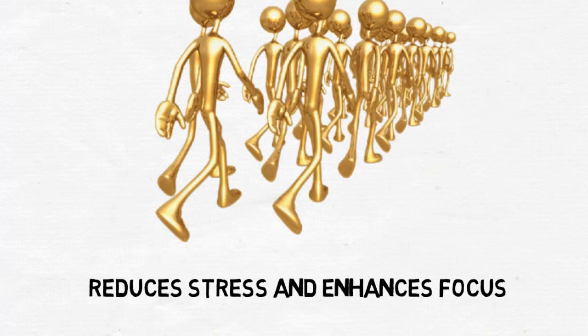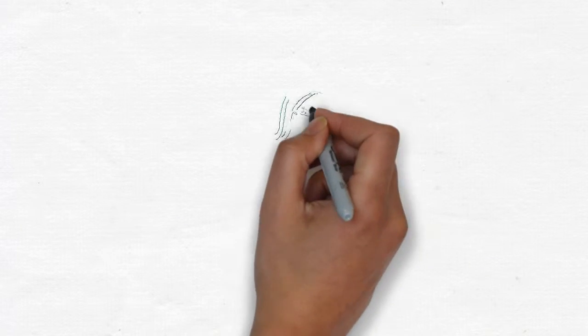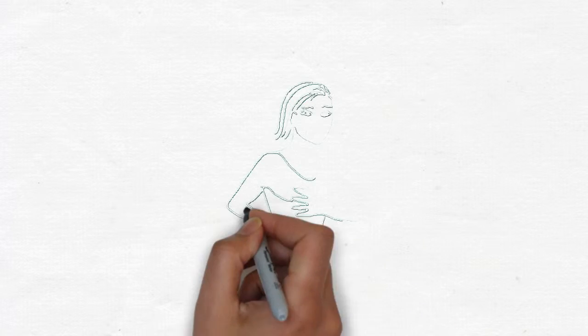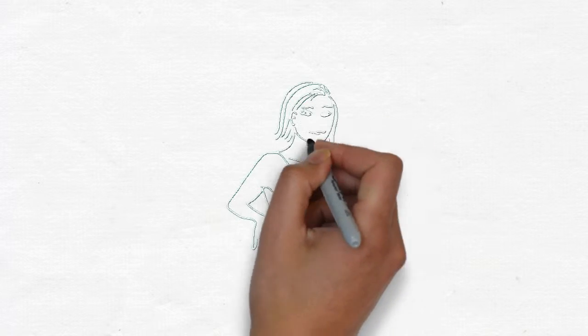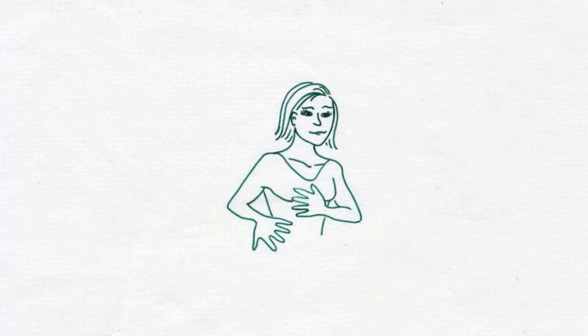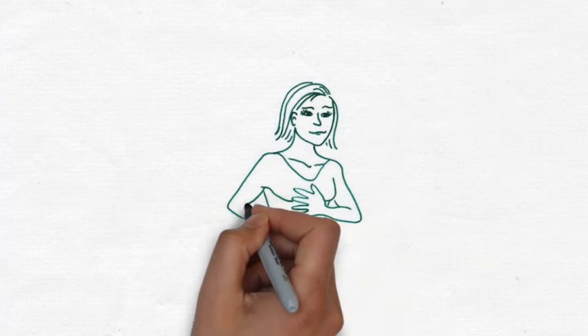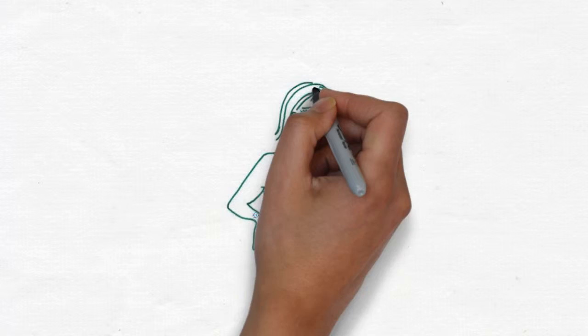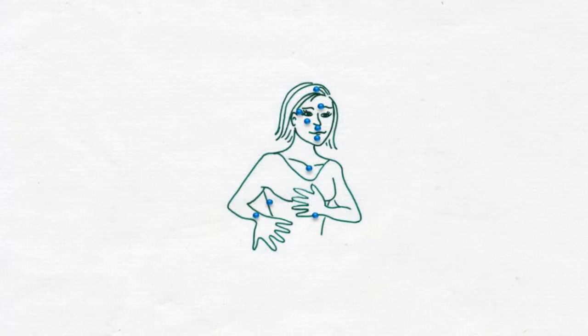It's called EFT, or emotional freedom technique, but most people refer to it as tapping. Tapping involves using the index finger to gently tap traditional acupressure points. While this is done, the person using the tapping technique also repeats a specific sentence or phrase.